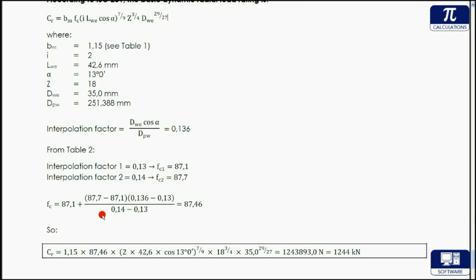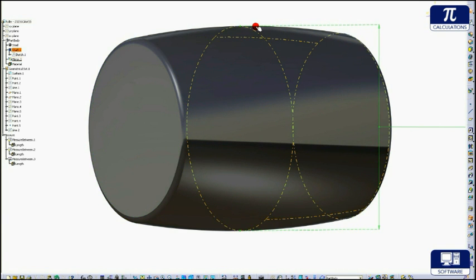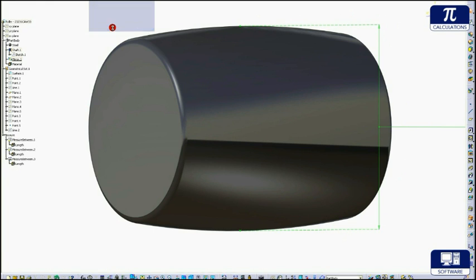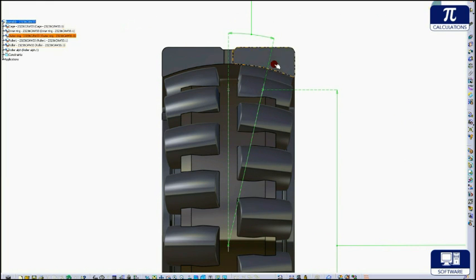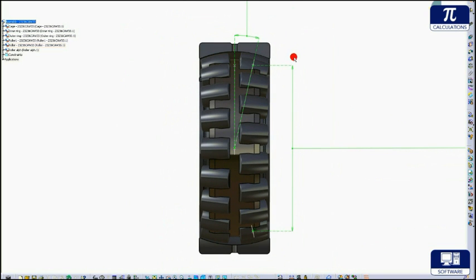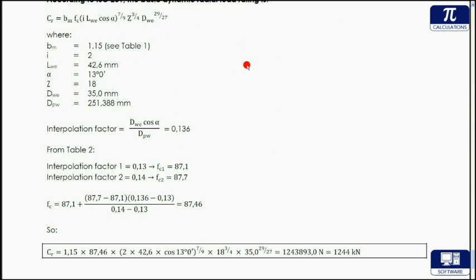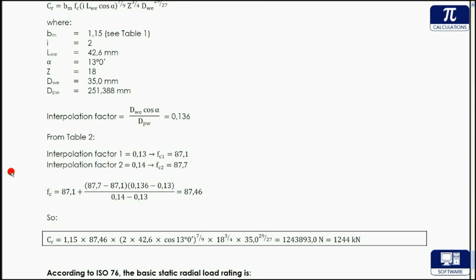The factor FC is proportional to the relations between the roller diameter DWE, the nominal contact angle alpha, and the pitch diameter of the rolling element DPW. Values of the FC forming intermediate values of this ratio are obtained by linear interpolation. In this case, FC is equal to 87.46.